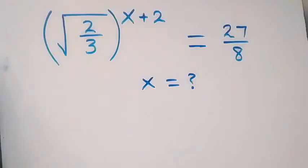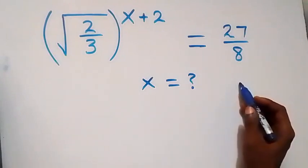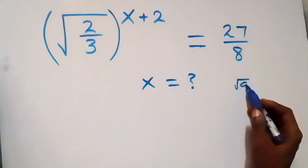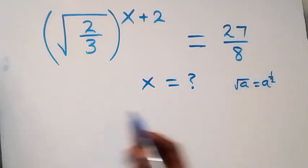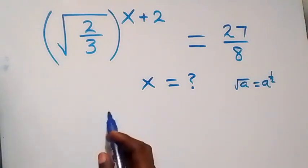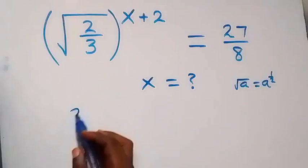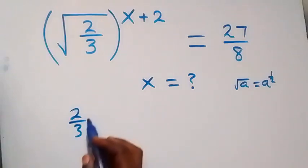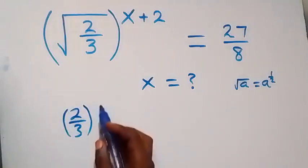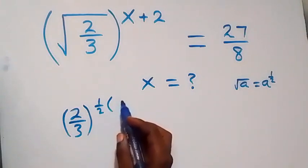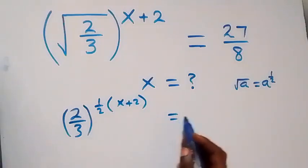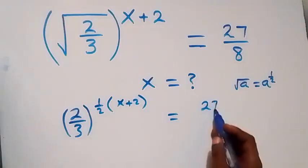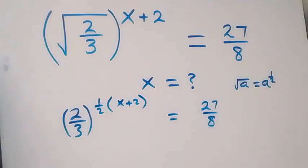Hello, you're welcome. Here's how to solve this nice math problem. When we have root a, we can equally write it as a raised to power half. So the square root here can be written as raised to power half, and we have 2 over 3 raised to power half, then multiplied by x plus 2, which equals 27 over 8.